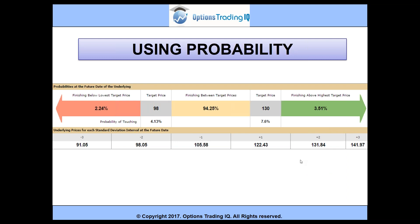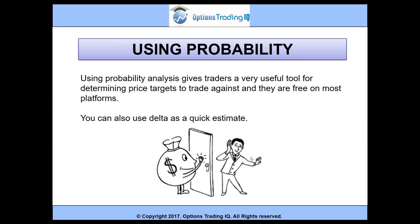A lot of brokers will have probability calculators. This is an example of one — you can put in your stock prices and your targets. You can see here that 94% of the time, this particular stock is going to stay between 98 and 130. That allows us to set our strikes when we're doing things like iron condors and credit spreads. These are all free online these days and very easy to find. Using probability analysis gives traders a very useful tool for determining price targets to trade against. You can also use delta as a quick estimate — most brokers have these tools available.